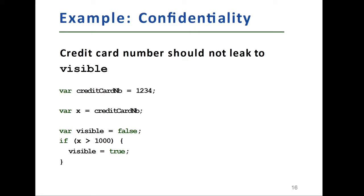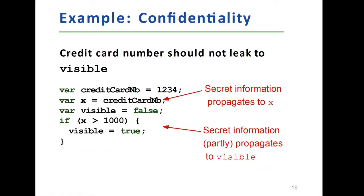However, credit card number, the first variable, is a private property. It shouldn't be visible to unauthorized parties. Here as you can see on the line, the if control, secret information actually, in the second line, secret information propagates to x.